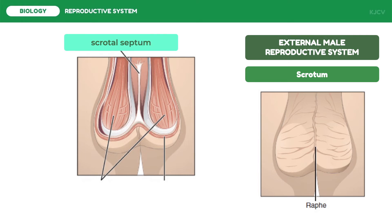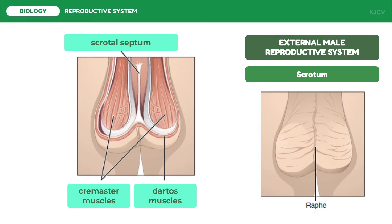The scrotum is about two to three degrees Celsius lower than the normal body temperature. Inside the scrotum are important muscles which aid in temperature maintenance of the testes: the cremaster muscles and the dartos muscles. By contracting, these muscles lift the testes in cold weather, bringing the testes closer to the body and decreasing the surface area of the scrotum to maintain heat. Alternatively, the scrotum relaxes as external temperature increases, pushing the testes away from the body and increasing the scrotal surface area to facilitate heat loss.